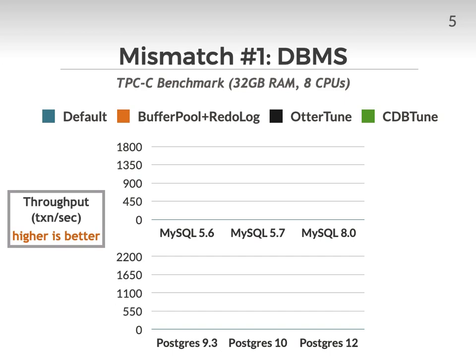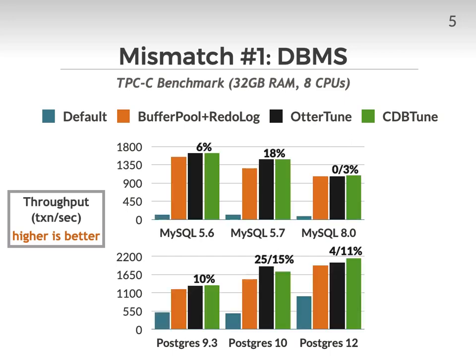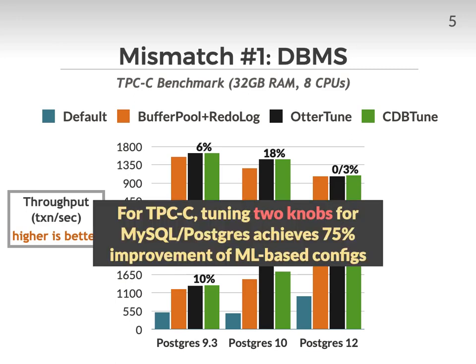The first mismatch is that previous works only consider open-source DBMSs with limited tuning potential. To demonstrate this, we've plotted the throughput for the TPCC workload for four different configurations across three different versions of MySQL and Postgres. The orange bar shows the performance from tuning two configuration knobs that control the size of the buffer pool and redo log file, and the black and green bars show the performance achieved by two ML-based tuners that each tune around 10 knobs. The takeaway is that for the TPCC workload, you can achieve at least 75% of the improvement from the optimized configurations by tuning only two knobs across these MySQL and Postgres versions. But what we wish to know is how do commercial systems compare?